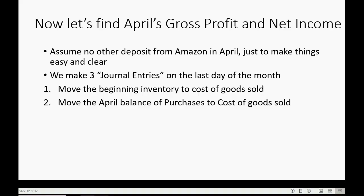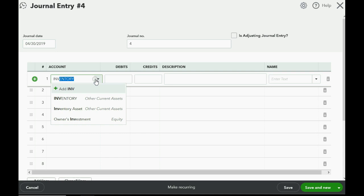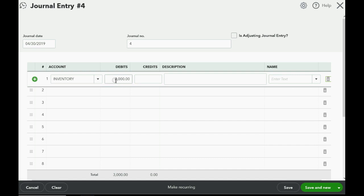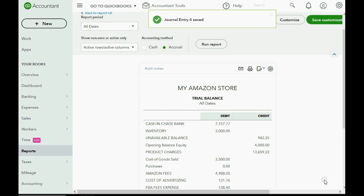For the third journal entry, you must physically count your ending inventory. We'll assume a physical count on April 30th shows $3,000 worth of merchandise on hand. Since inventory now has a zero balance after the first adjustment, we debit Inventory for $3,000 and credit Cost of Goods Sold for $3,000 to reflect what remains unsold. Click Save and Close.